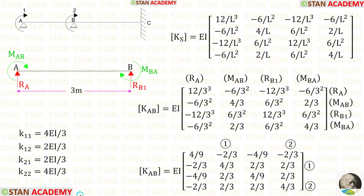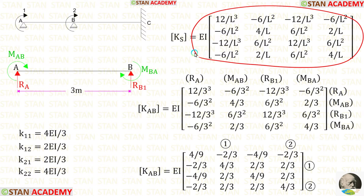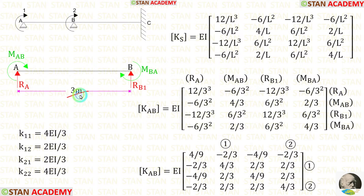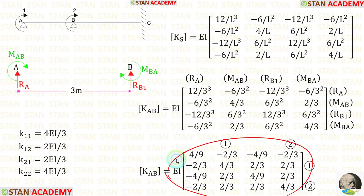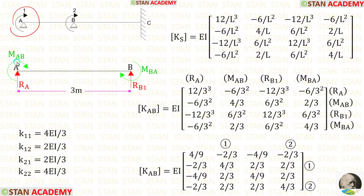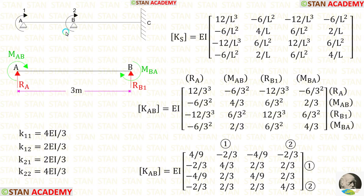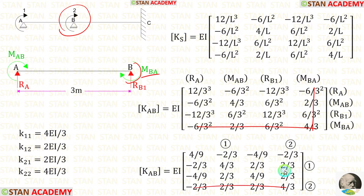Now we are going to find the stiffness matrix. First we make the stiffness matrix for span AB. The length of span AB is 3, so we apply L = 3 in all elements. Our first coordinate is at point A, where we have movement M_AA — it represents the second row and second column, named coordinate 1. Our second coordinate is at point B, where M_BA represents the third row and third column, named coordinate 2.